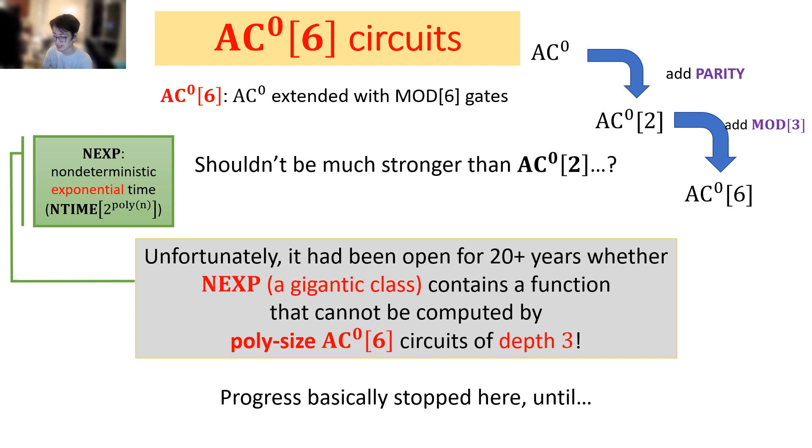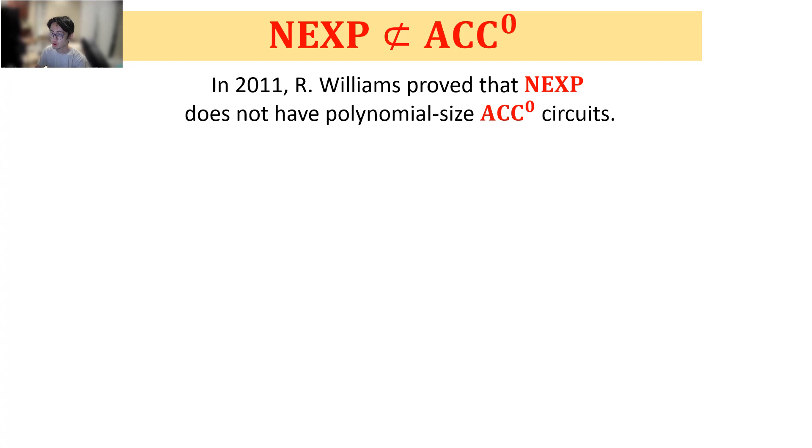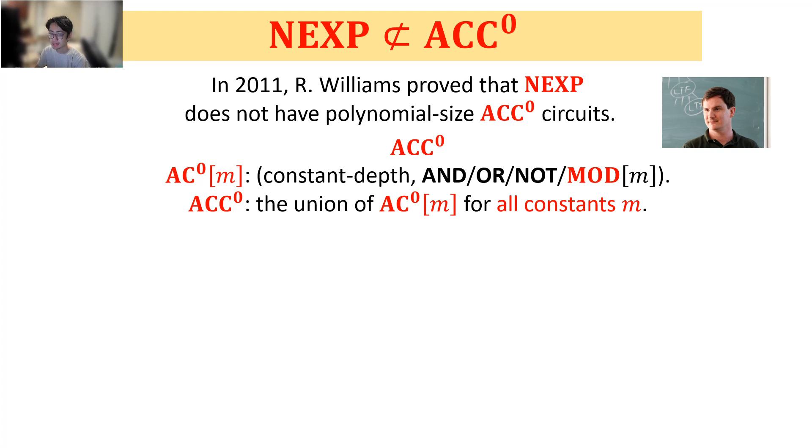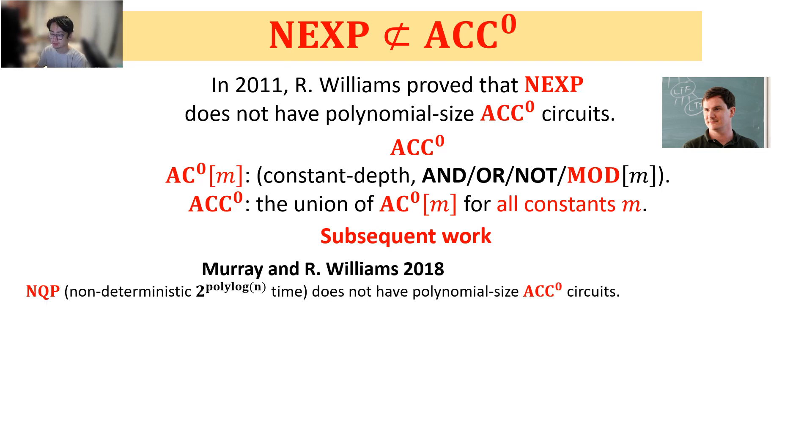In 2011, R. Williams proved that NEXP does not have polynomial size ACC^0 circuits. Similar to ACC^0[6], we use ACC^0[m] to denote constant depth polynomial size AND/OR/NOT/MOD[m] gate circuits. And ACC^0 is simply the union of ACC^0[m] for all constants m. After Williams's work, Murray and R. Williams proved that NQP, non-deterministic quasi-polynomial time, does not have polynomial size ACC^0 circuits, which greatly improves the complexity class NEXP to NQP.